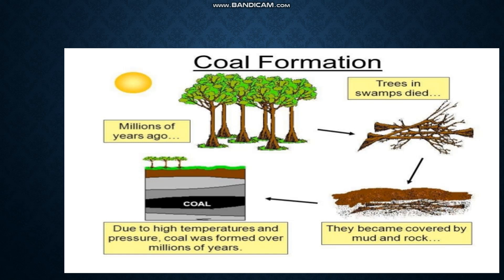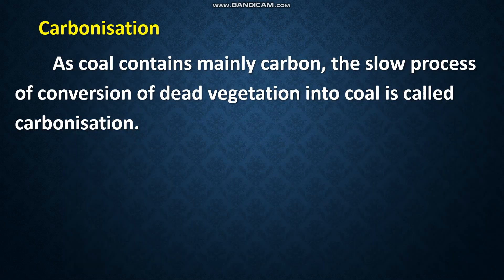Under high pressure and high temperature, dead plants got slowly converted to coal. The temperature and pressure rose, and this dead plant matter was slowly converted into coal. This conversion of dead vegetation into coal is called carbonization. Why? Because coal contains mainly carbon. So the slow process of conversion of dead vegetation into coal is called carbonization.